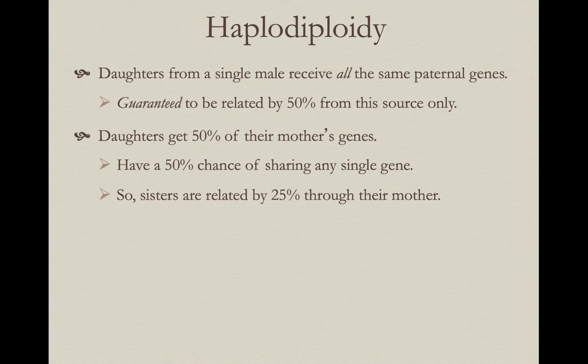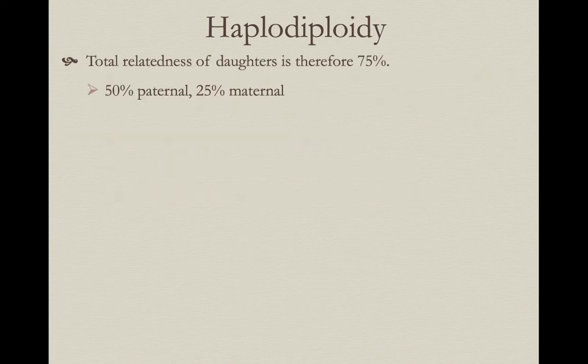Sisters are related to each other by 25% from their mom. They get 50% of mom's genes, and they have a 50% chance of sharing any single one of those genes — reducing it to 25% relatedness just through mom. Adding this up together, the total relatedness of sisters to each other is 75%: 50% paternal and 25% maternal.